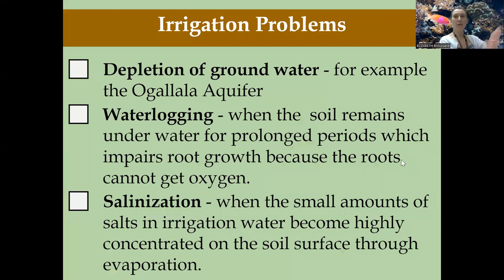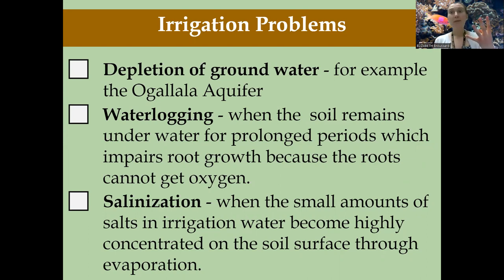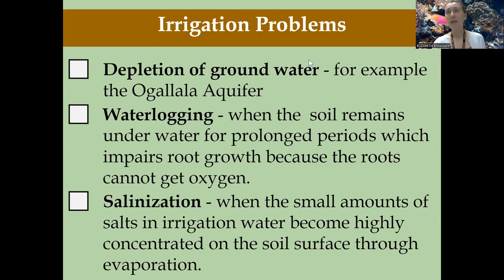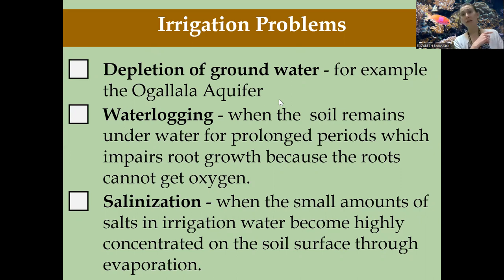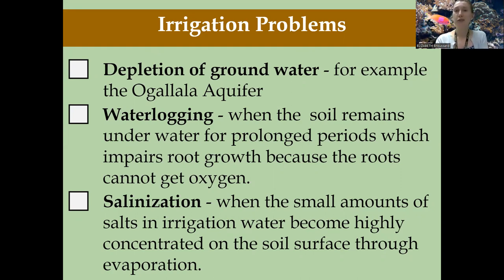Now we're talking about irrigation. The four main types of irrigation are the plow, the furrow, spray, flood, and hydroponic. One thing we worry about in agriculture is depleting our groundwater. If we're not doing so sustainably — not returning water back into our aquifers — we worry about groundwater depletion. We talked about this with the Ogallala Aquifer, which is being depleted over time because of increased crop production and the draw on the water supply in the central United States.